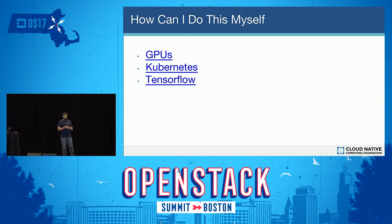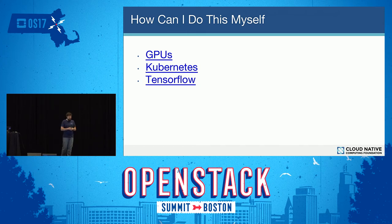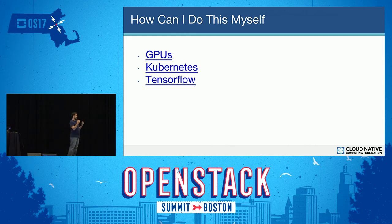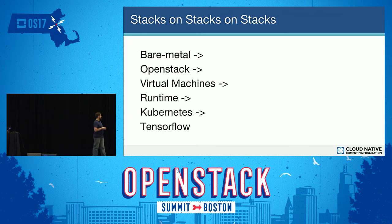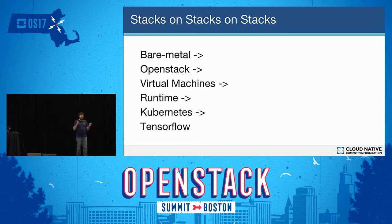Kubernetes is going to help you cut out some of the corner cases you'd have to deal with if you were deploying this on bare metal directly. TensorFlow is an interesting project out of Google that allows you to leverage some of these more advanced APIs without building it yourself. There are also examples of deploying TensorFlow atop Kubernetes. If you're going all out, you start with bare metal, put OpenStack on it, then a virtual machine, then a containerized runtime like Docker or Rocket, then Kubernetes, then TensorFlow. There's a lot going on here.